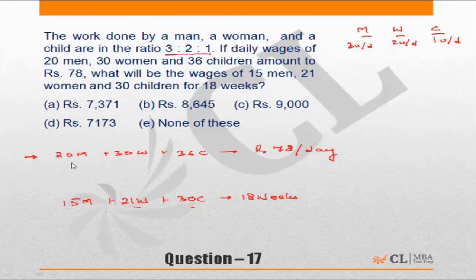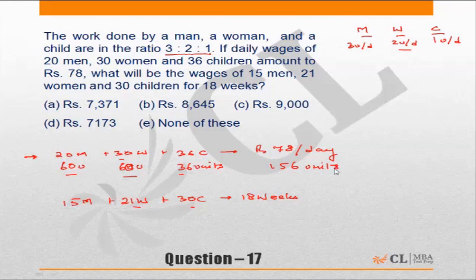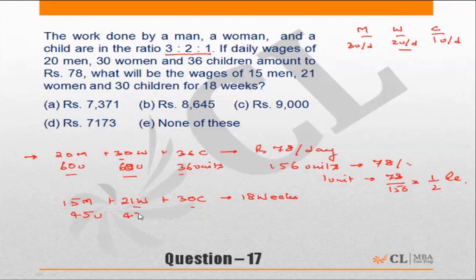20 men do 20 into 3 equals 60 units of work per day. 30 women at 2 units per day do 60 units. 36 children at 1 unit per day do 36 units. Total work done is 60 plus 60 plus 36 equals 156 units of work, which has a value of 78 rupees. Therefore one unit of work equals 78/156, which equals 1/2 rupee. In the second case: 15 men do 45 units, 21 women do 42 units, and 30 children do 30 units — a total of 117 units per day.